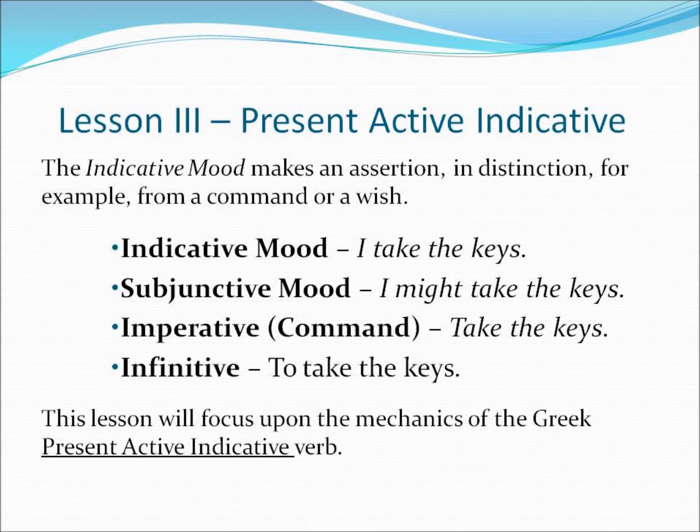Now we're going to deal with and talk about the mood of the verb, and specifically the indicative mood. The indicative mood makes an assertion — it doesn't claim whether to be truthful or not, it just makes an assertion, in distinction from a command or a wish. For each type of mood: the indicative mood says, I take the keys; the subjunctive mood says, I might take the keys, or I should take the keys; the imperative mood, which is the mood of command, take the keys; and finally the infinitive, to take the keys.